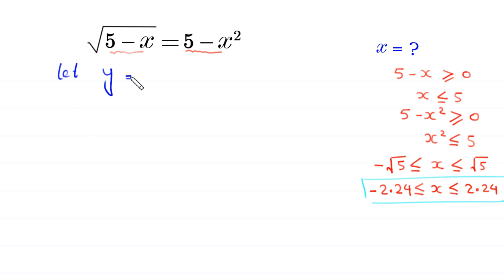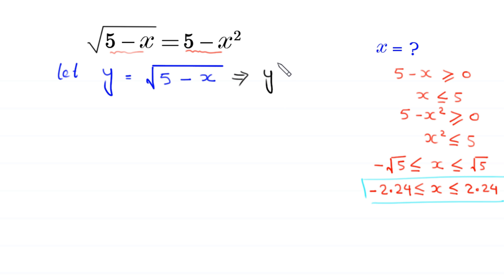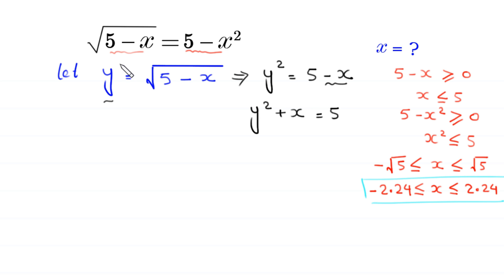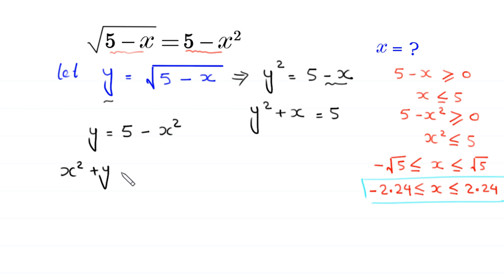...let y equal to square root of 5 minus x. If we square both sides, this implies y squared equals 5 minus x, and moving negative x to the left-hand side gives y squared plus x equals 5. Substituting y into the original equation gives y equals 5 minus x squared, and moving negative x squared to the left-hand side gives x squared plus y equals 5.